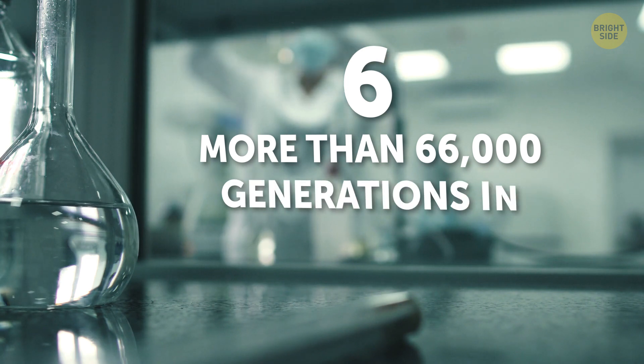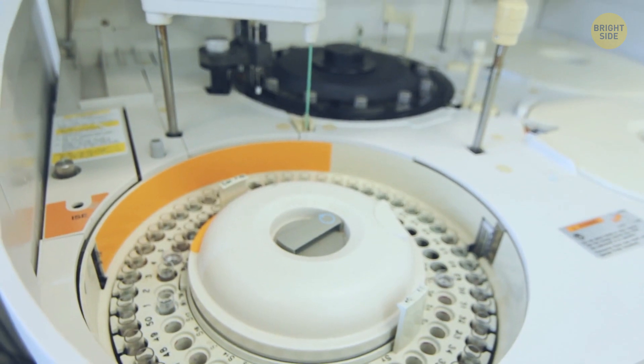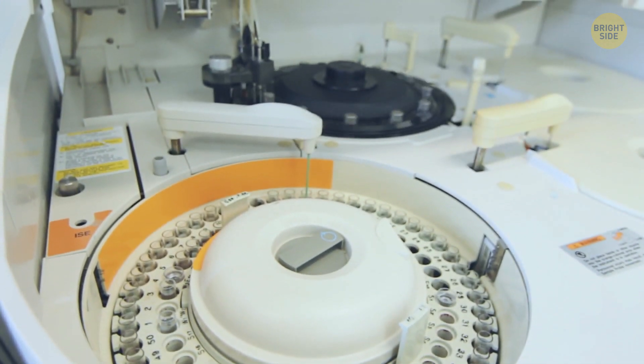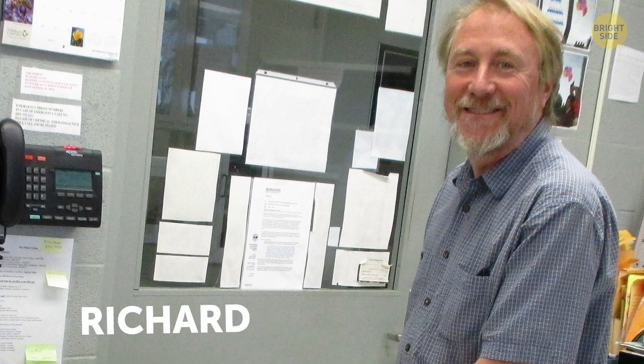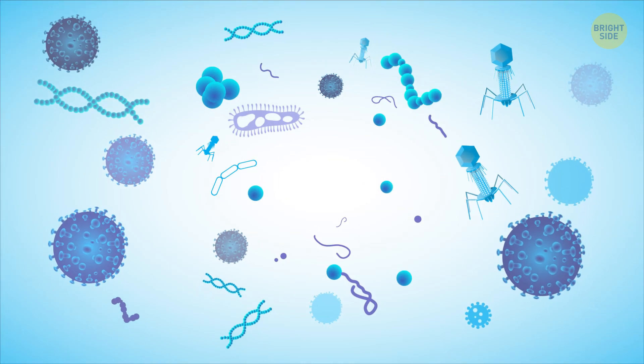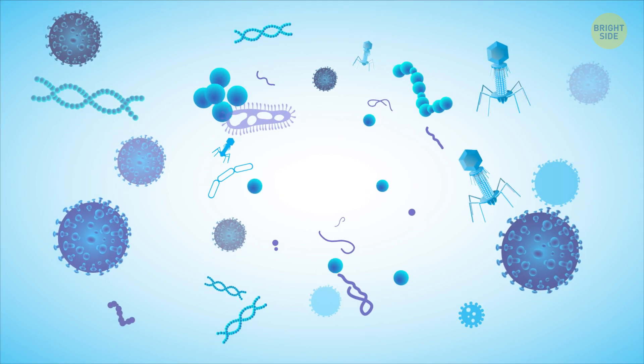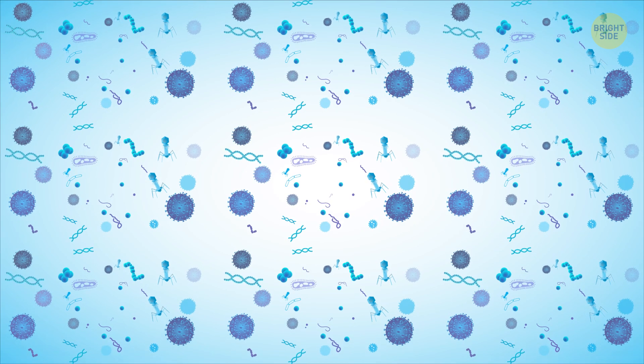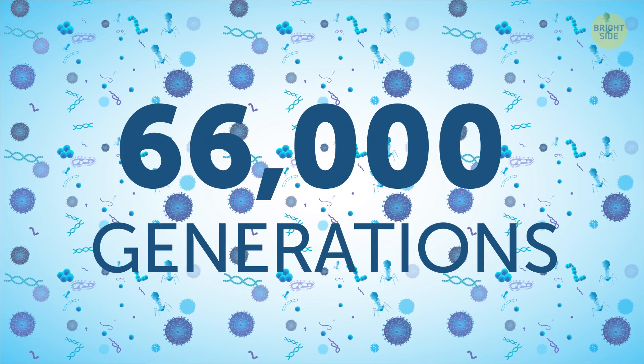More than 66,000 generations in petri dishes. Another example of microbiologists' impressive patience, perseverance, and persistence is an experiment that's been run by American evolutionary biologist Richard Lensky since 1988. It may seem like it's not that long, but only in human years. In 2016, 12 populations of bacteria named E. coli reached the point of 66,000 generations. For human species, that would be a time span of a bit under 2 million years.